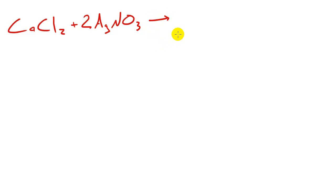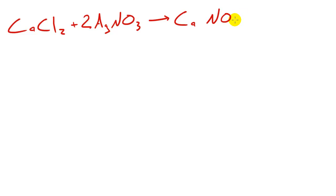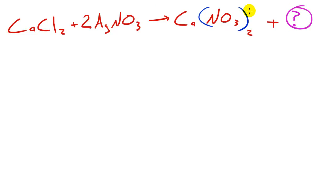I gave you guys the starting point already. You end up with calcium nitrate, which is written like Ca(NO₃)₂, and we have two of these. I said okay, find out what else we get — pretty much find out what this other product is.